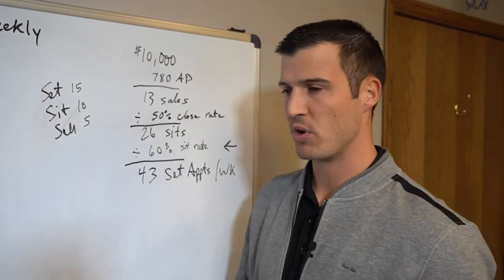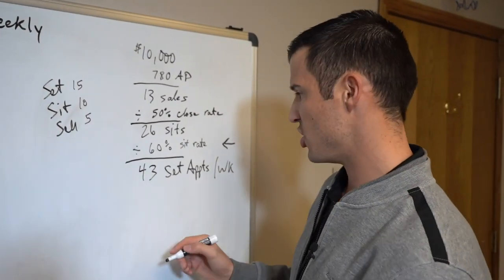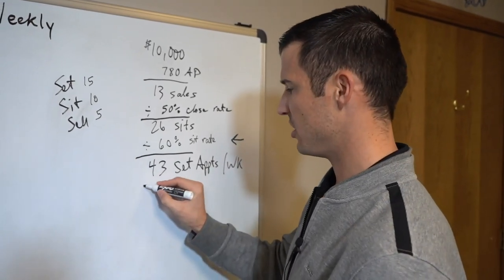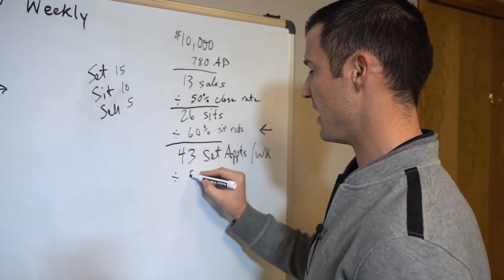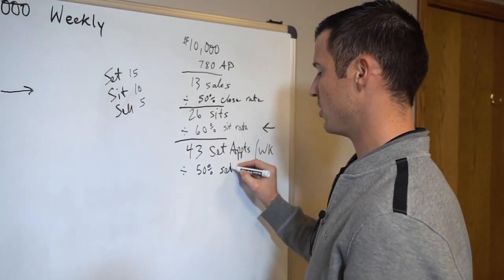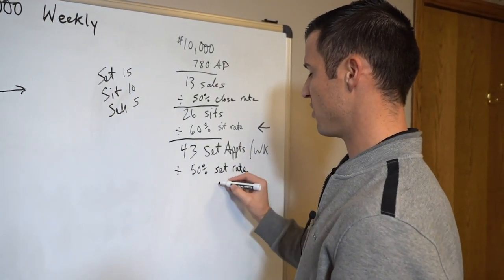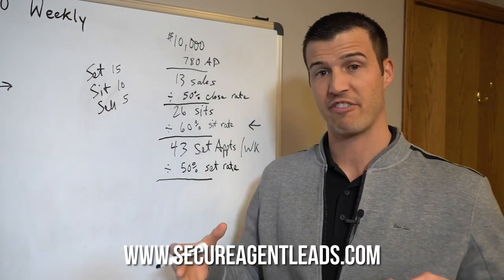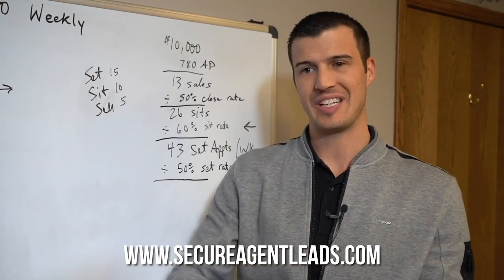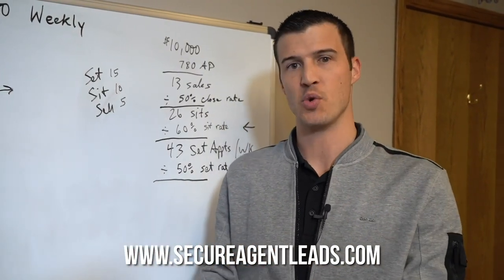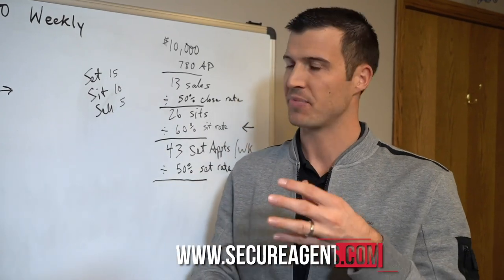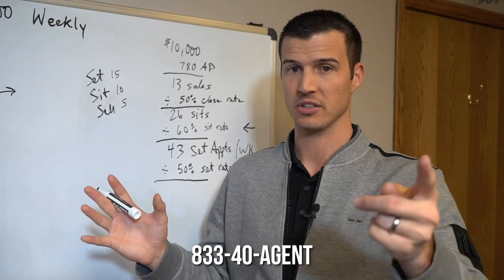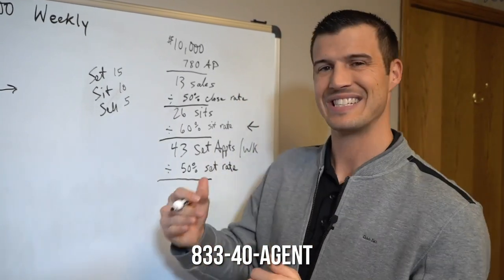Now let's just say you get some good solid leads and you actually have a 50% set rate. Especially if you're working our leads where they're exclusive, they come in real time, they're fast. We drive inbound calls to you. We actually set up automated processes to get you an automated appointment set. There's some different things we're doing. It's freaking crazy. You may want to call 833-40-AGENT. So with a 50% set rate, that means you would need 86 leads per week.